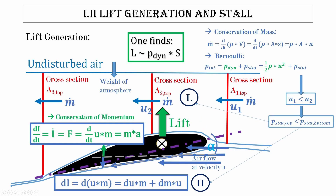That's the thrust, lift, drag, and weight overview. Now let's have a closer look at lift generation, because understanding this helps us understand aircraft performance and what conclusions we can draw as pilots on how to tweak performance. The lift force generated is proportional to the dynamic pressure times the surface area of the wing. Let's see how we get to this conclusion.